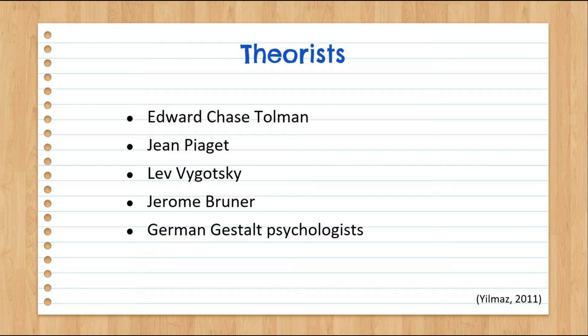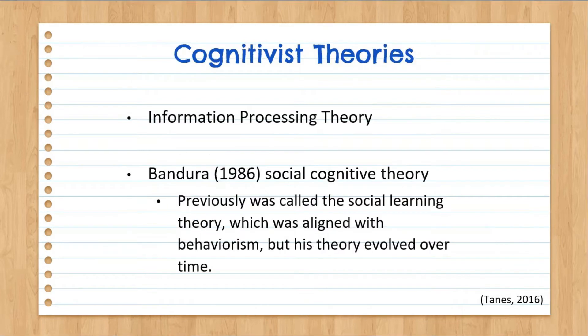By the mid-1950s, cognitivism became very popular in education. Quite a few specific theories come from this cognitive perspective. Generally, what unites them is that they examine how individuals process the information they receive to generate durable mental representations. A good example is information processing theory, wherein learning is defined as a series of transformations of information within the brain.